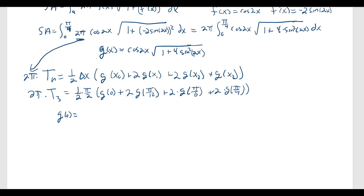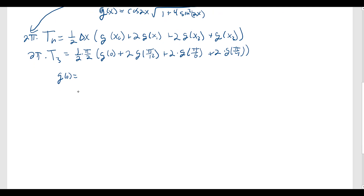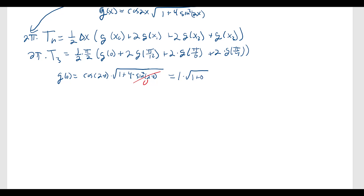Let's evaluate each value. g(0) is cosine of 2 times 0 times the square root of 1 plus 4 times sine squared of 2 times 0. Since sine of 0 is 0 and cosine of 0 is 1, this simplifies to 1 times the square root of 1 plus 0, which equals 1.